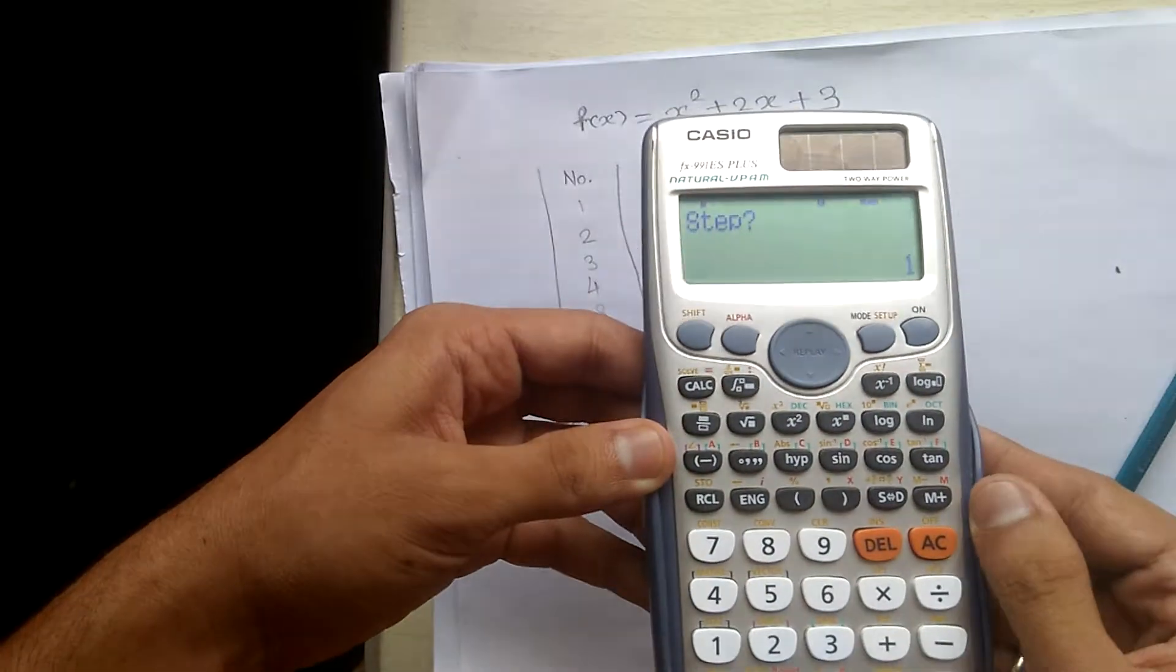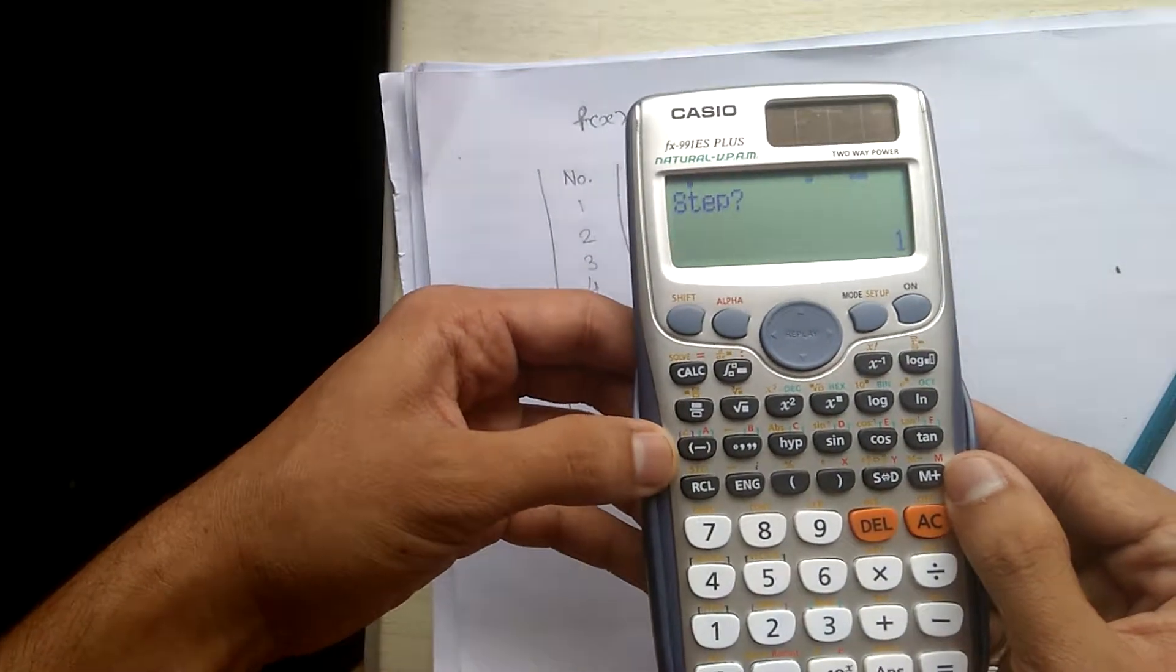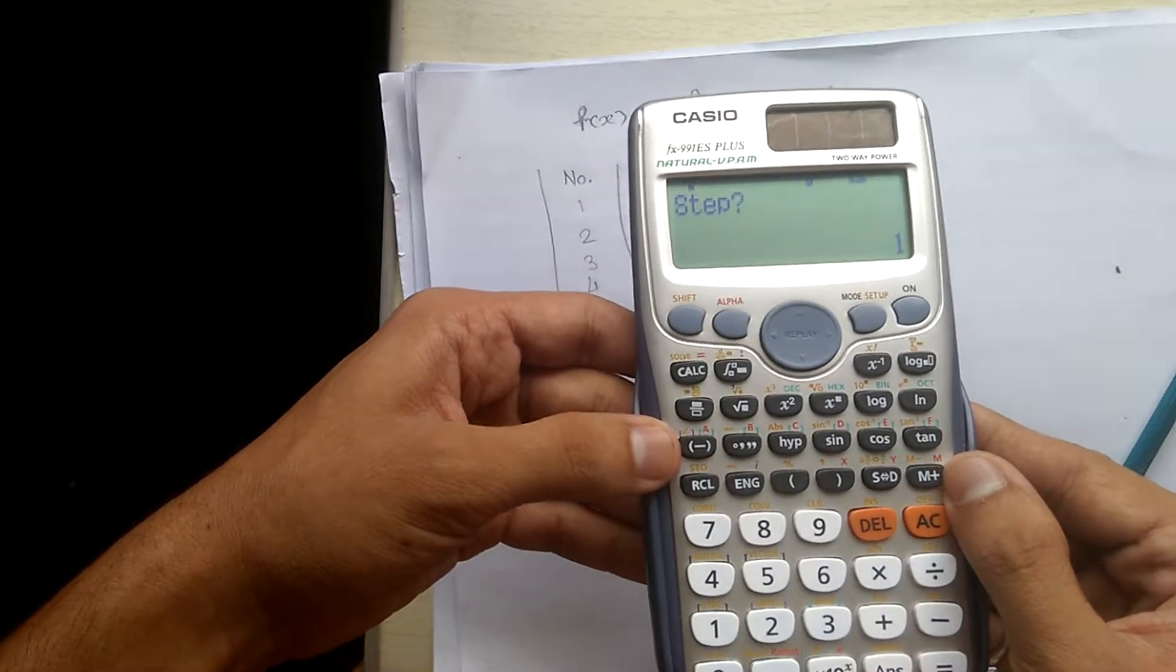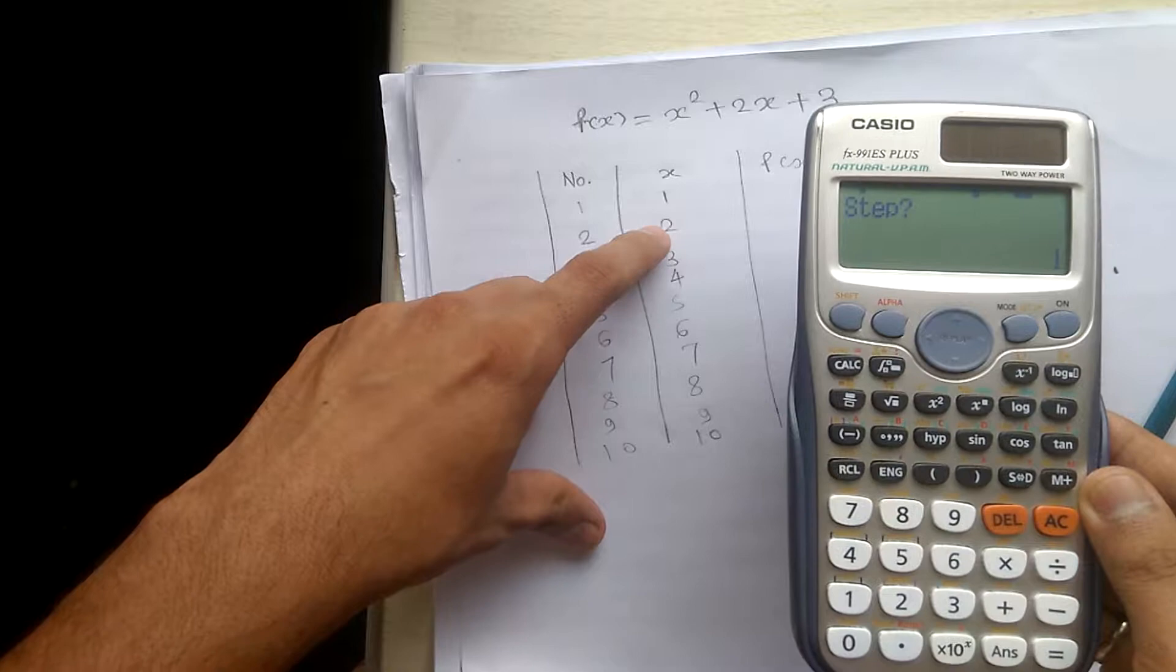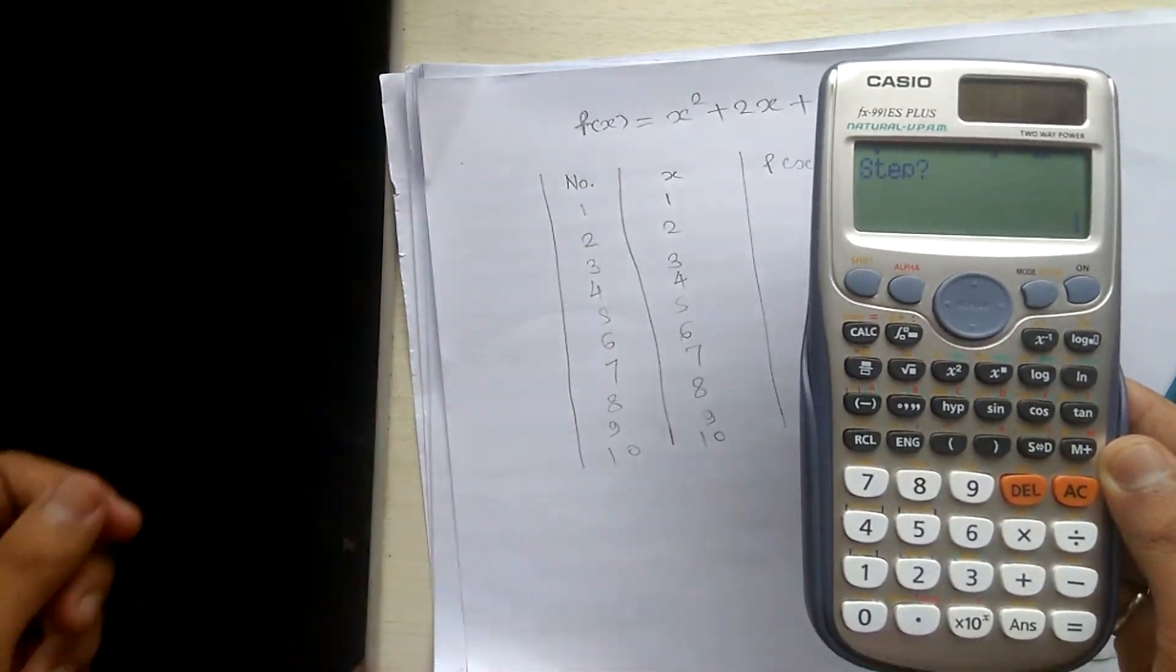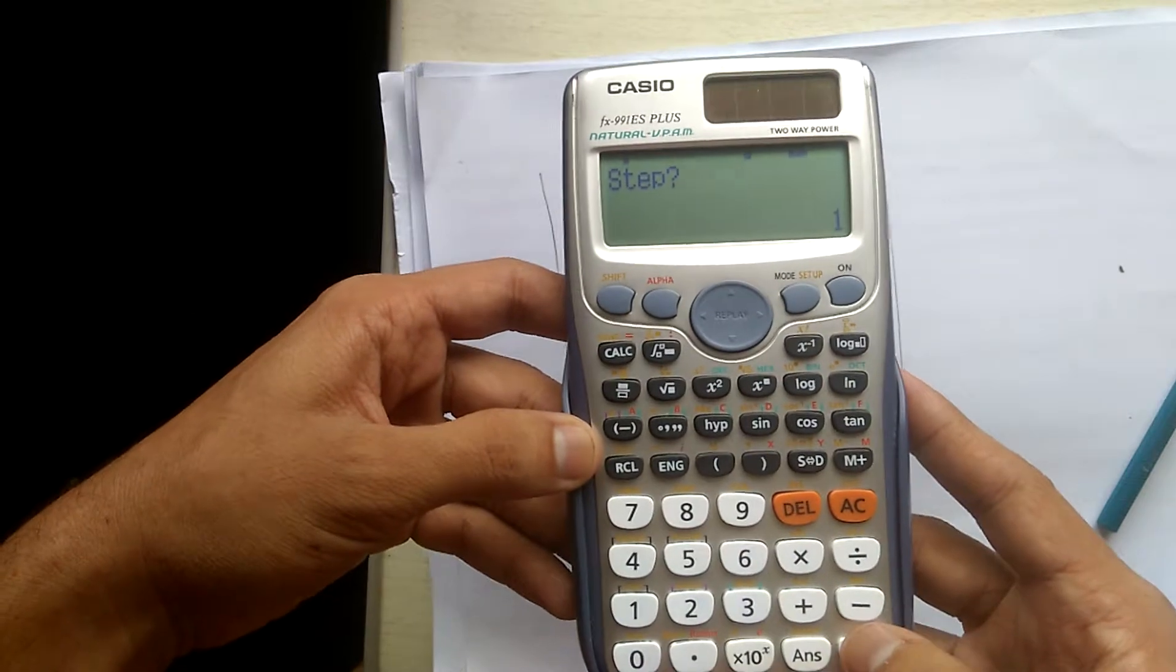It will again ask how many steps you want, or the incremental step you want. I want 1 at each step. That means I want a value of 1, 2... It is the incremental value. That is plus 1, plus 1, plus 1. I will put 1 and press equal.